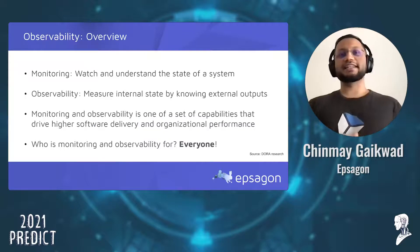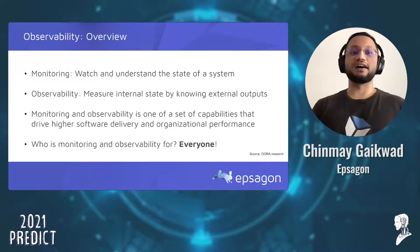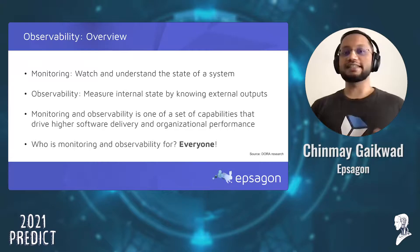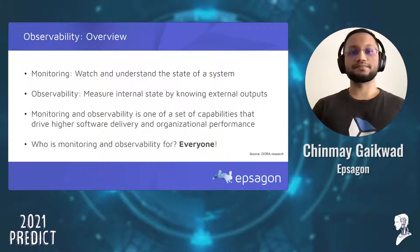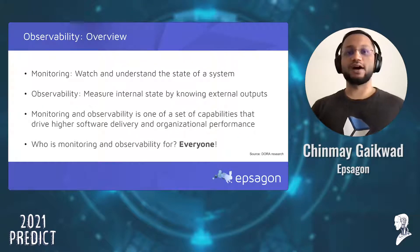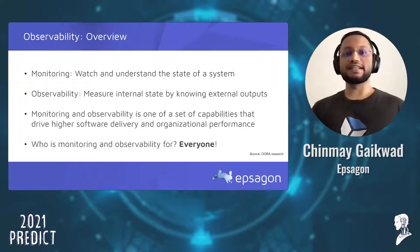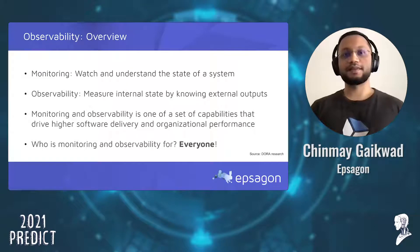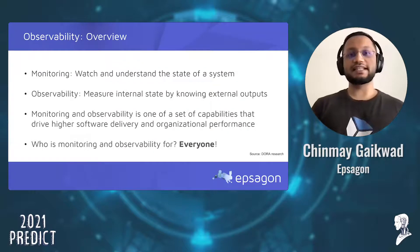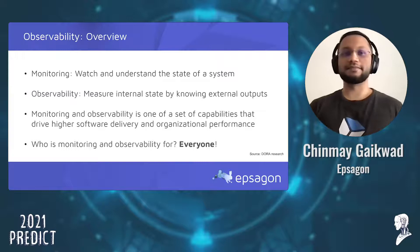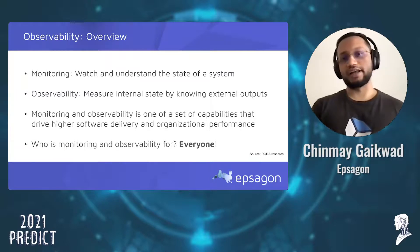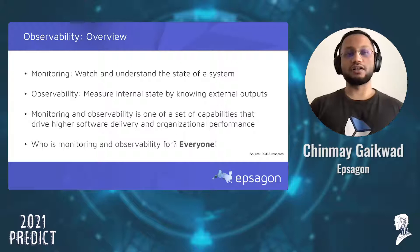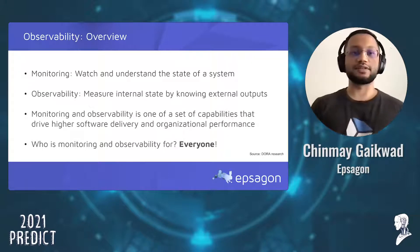We should start by understanding what observability and monitoring exactly are. Monitoring tells you if the system is working. Observability lets you ask why it is not working. Observability basically involves instrumenting systems and applications to collect relevant data. Observability and monitoring go hand in hand. In my opinion, observability is not just a tool — it's a must-have culture for any organization, important for all, right from developers to the C-suite.